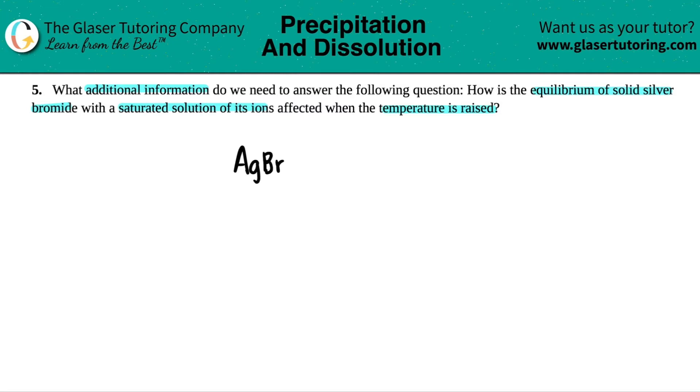Now, they did tell us that we had a solid silver bromide. So this is going to basically be in equilibrium with saturated solution of its ions. We just said before that we had Ag as a plus one and the bromine, which is a minus one. Anytime that you have charges, those are always going to be aqueous.